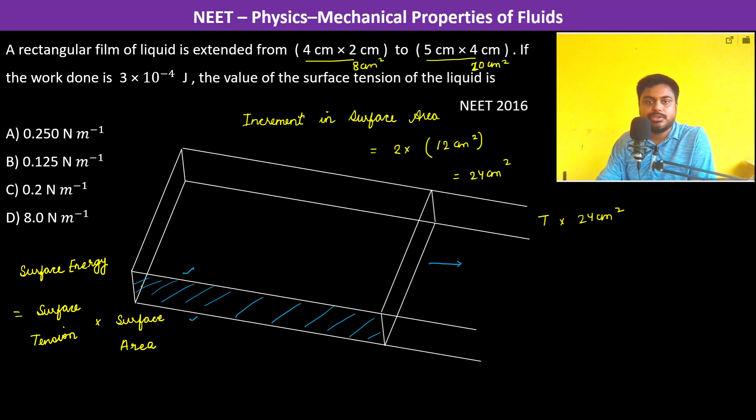Therefore T into 24 centimeter square equals 3 × 10^-4 joule, which is newton meter. So the surface tension T equals 3 × 10^-4 newton meter divided by 24 × 10^-4 meter square. We convert centimeter square into meter square.